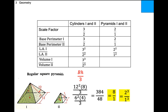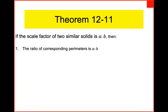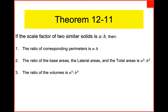Theorem 12-11: if the scale factor of two similar solids is a to b, then any two corresponding linear dimensions are in ratio a to b, the ratio of their surface areas (lateral, total, base) is a squared to b squared, and the ratio of their volumes is a cubed to b cubed.